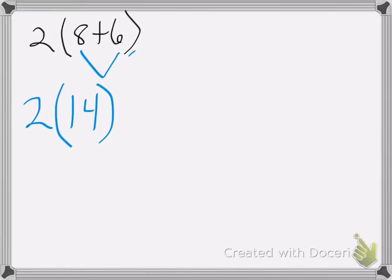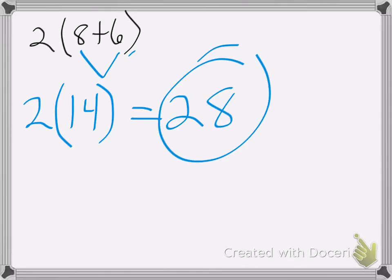Okay, now I can multiply. 2 times 14 is equal to 28. Okay, I hope that helps. Good luck on your homework!